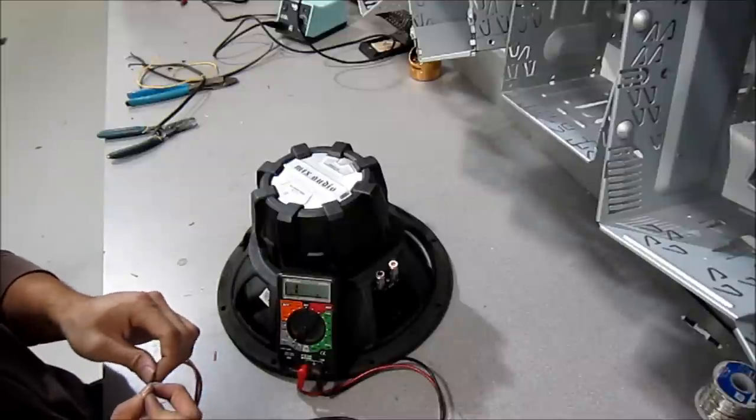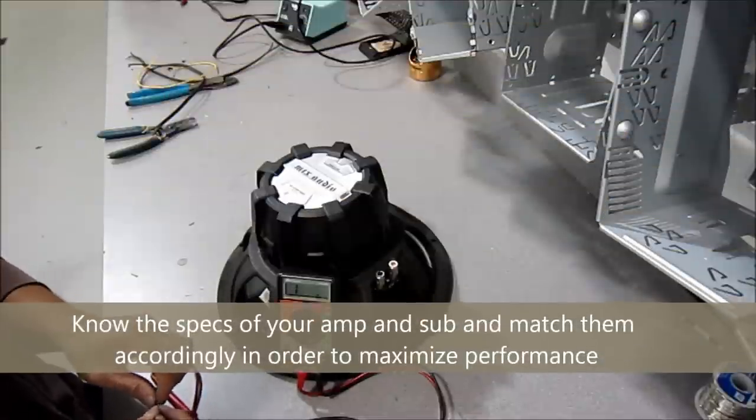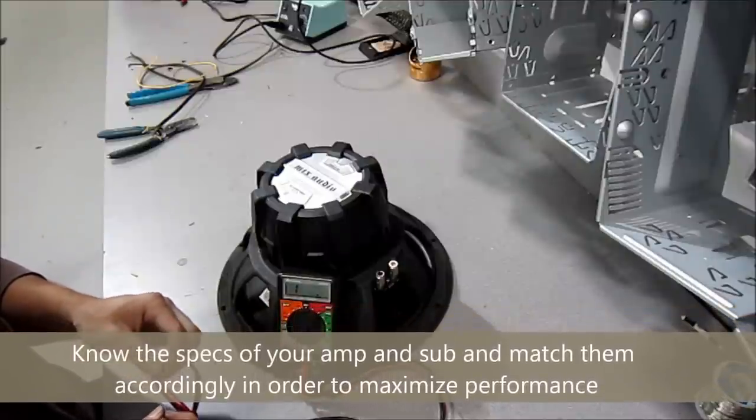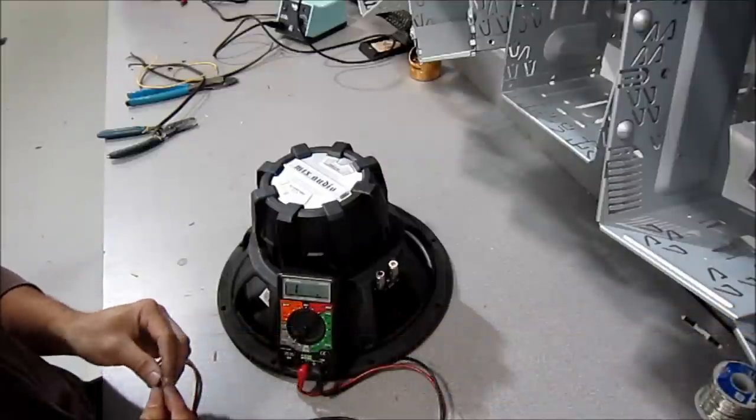Now the trick to make it easier on yourself is look at the specs of your amplifier and see if it needs to run at a 2 ohm or 4 ohm load to get maximum power. Then pick the sub appropriately after and wire it out.